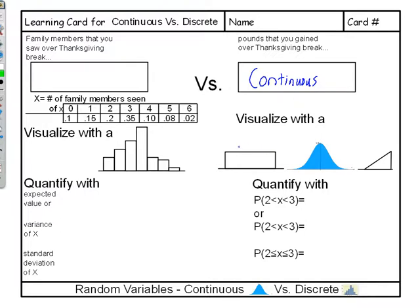We would visualize these with area density curves. These area density curves come in several different flavors. This is a uniform distribution where the probabilities of any particular range has the same height, and how you quantify this is with area calculations.